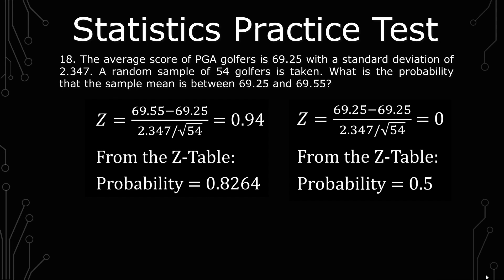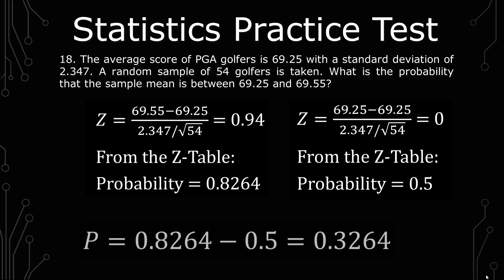Because we're asked to look in between these two numbers, all we have to do is simple subtraction. We do bigger minus smaller, because you can't have a negative probability. We have 0.8264 minus 0.5, which gives us 0.3264.